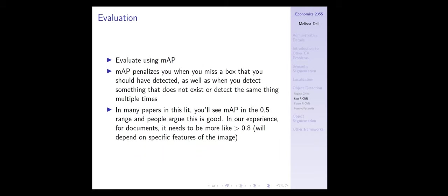How do we evaluate how well we're doing? We use a metric called mean average precision. Mean average precision penalizes you when you miss a box you should have detected, as well as when you detect something that doesn't exist or detect the same thing multiple times. In many papers in this literature, you'll see MAP in the range of 0.5 and people will argue that this is good. But in my experience with documents, it needs to be at least 0.8.